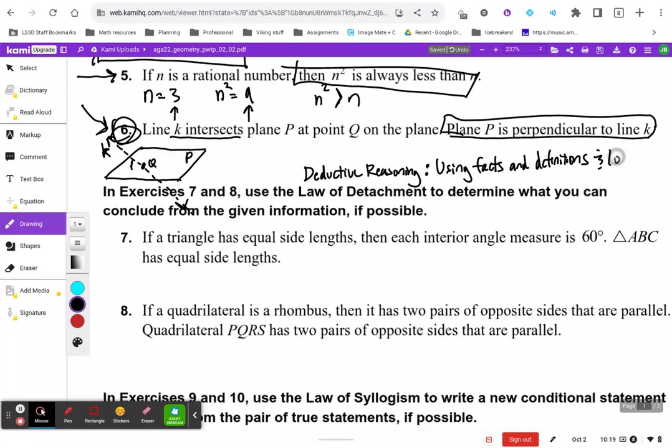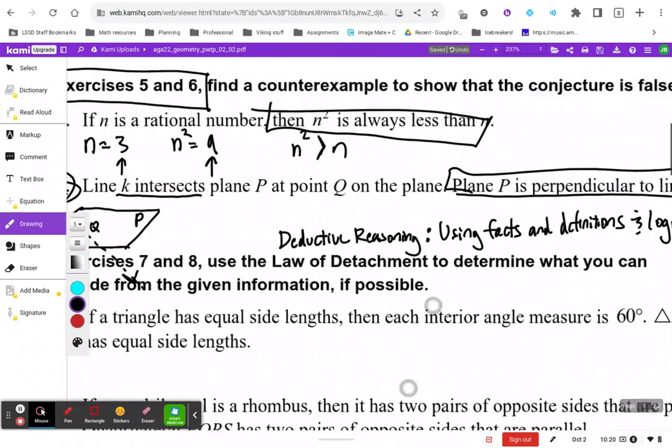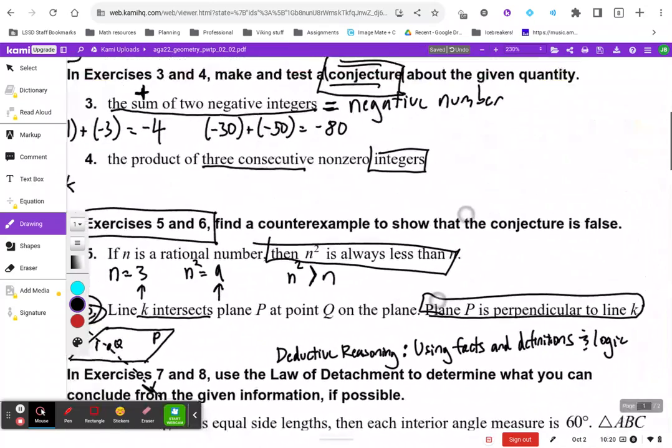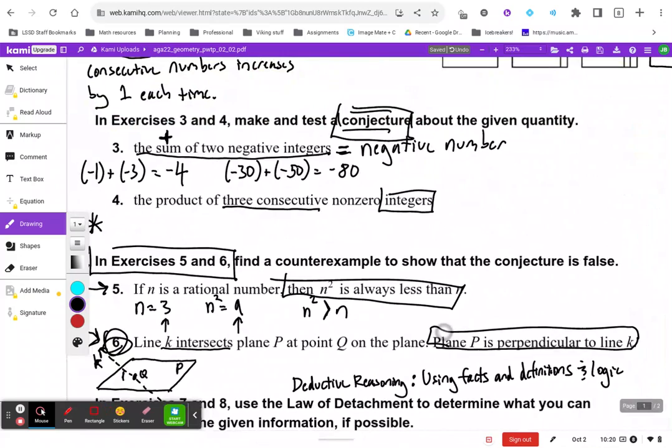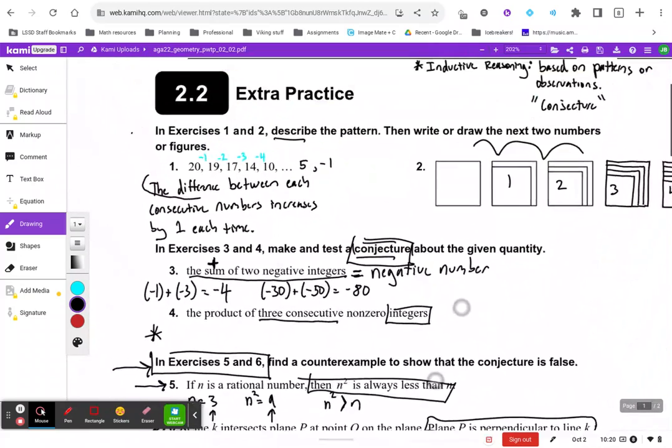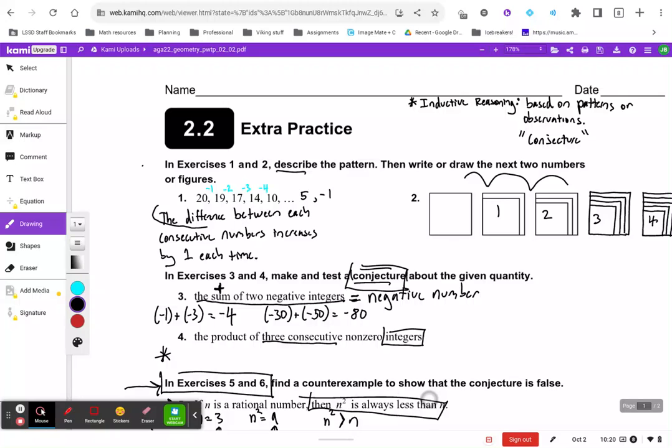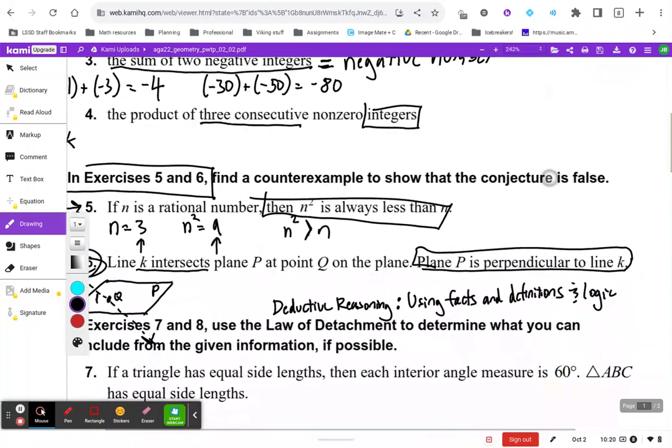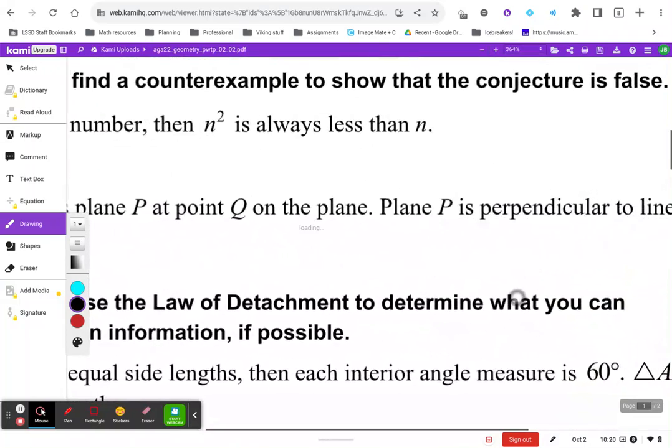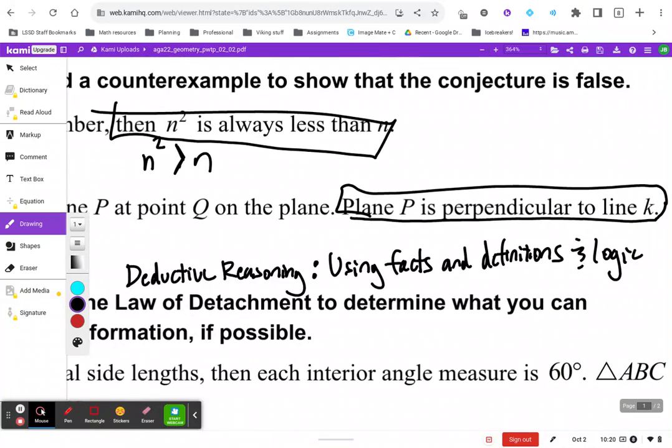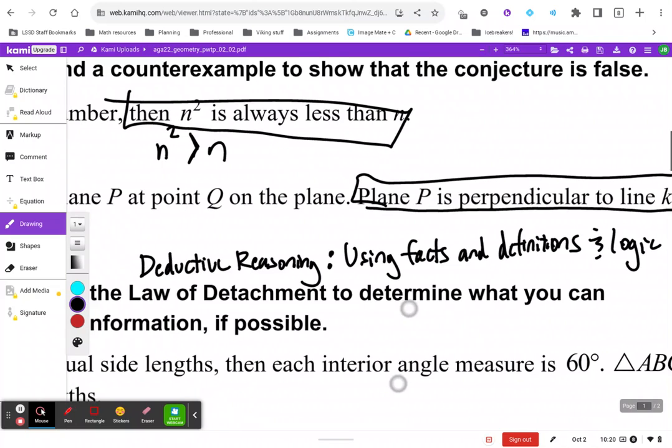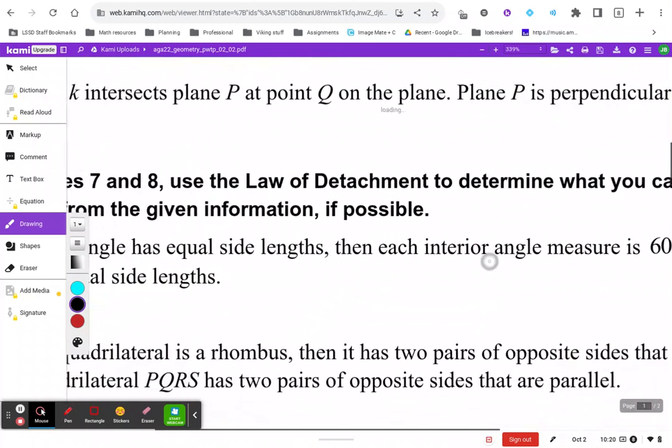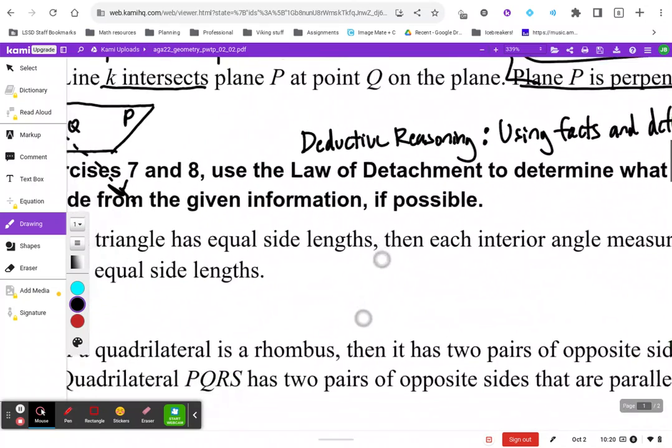Deductive reasoning is using facts and definitions to rigorously prove something using facts and definitions. I'm also going to use the word logic here. Inductive reasoning isn't 100% true. You can observe a pattern and make a conjecture, but it could be the case that your conjecture turns out to be false. There could exist a counterexample. Deductive reasoning is different. If you're using facts and logic, then you can come to a trustworthy conclusion. Deductive reasoning is more foolproof than inductive reasoning is.